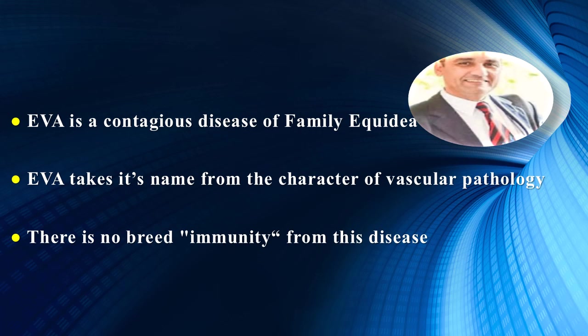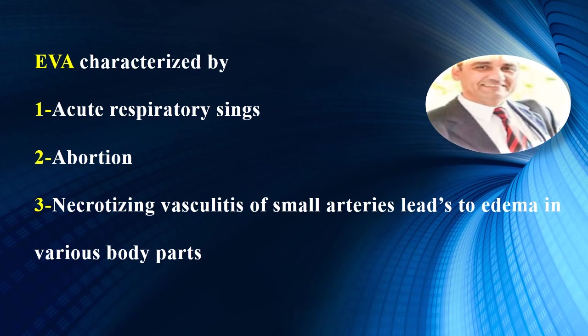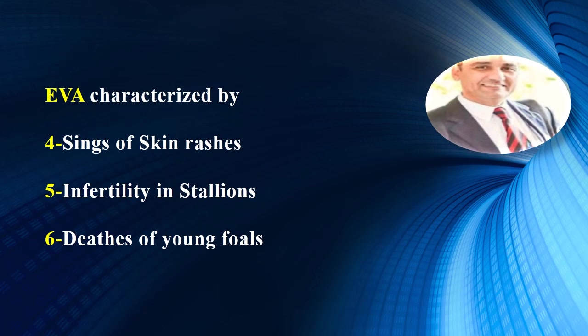Equine viral arthritis disease is a contagious subacute disease of family Equidae, taking its name from the character of vascular pathology. There is no breed immunity from this disease. It is characterized by acute respiratory signs, abortion in pregnant mares, necrotizing vasculitis of small arteries which leads to edema in various body parts, skin rashes, infertility in infected stallions, and deaths of young foals.